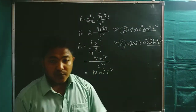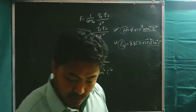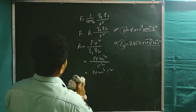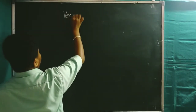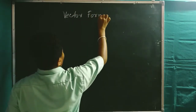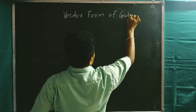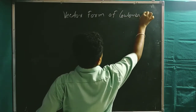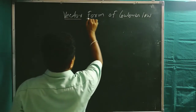Now we'll go to the next topic we are supposed to discuss today — that is the vector form of Coulomb's law. Please note down: vector form of Coulomb's law.